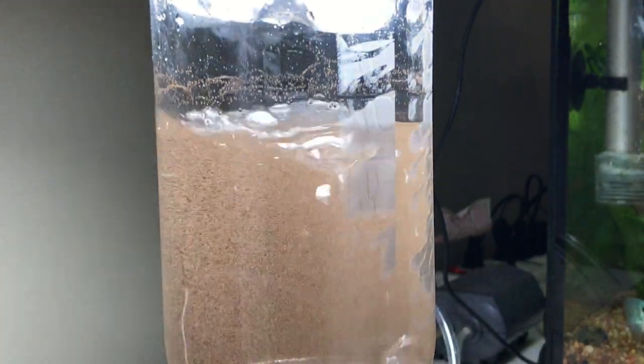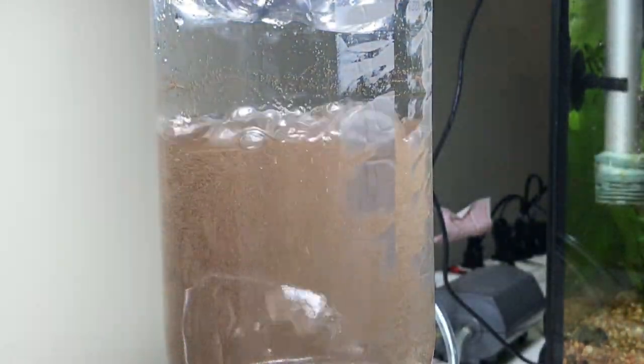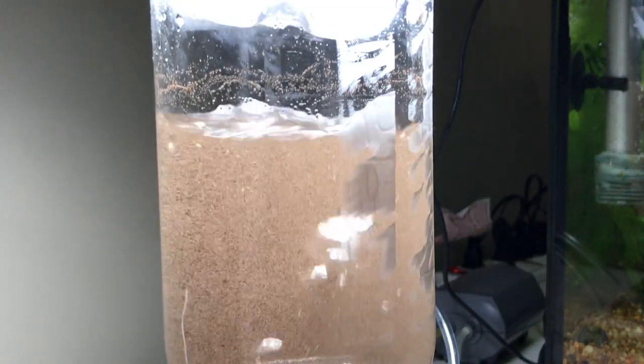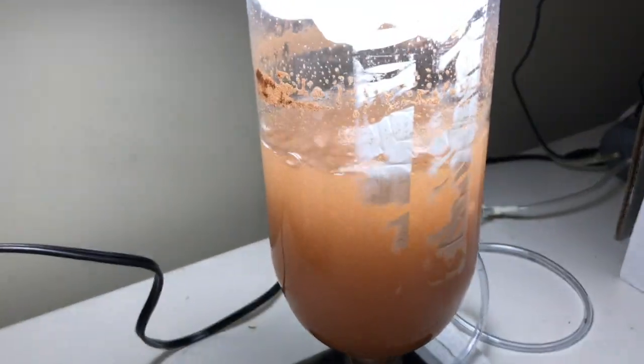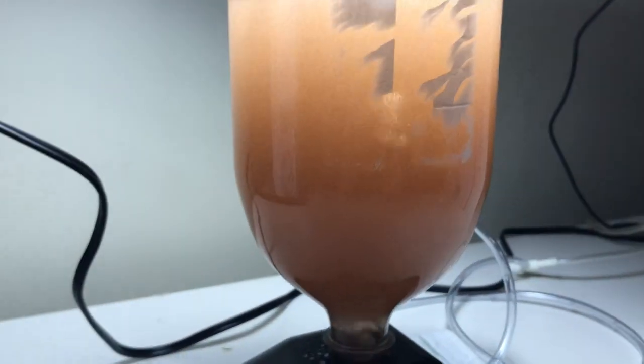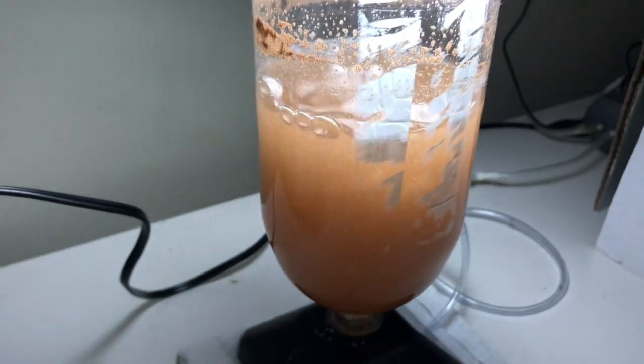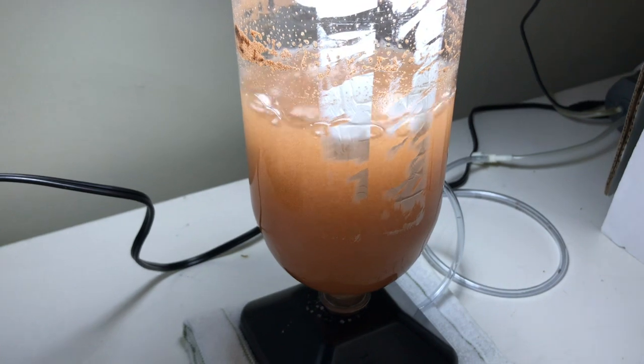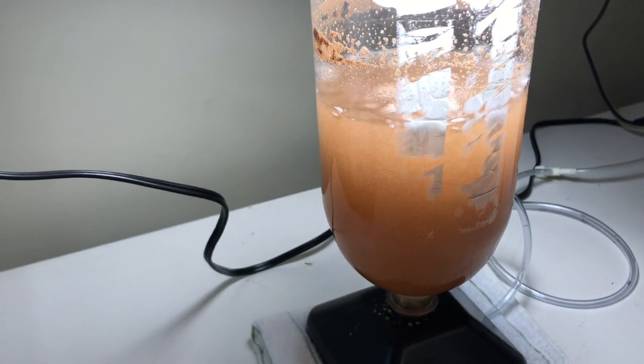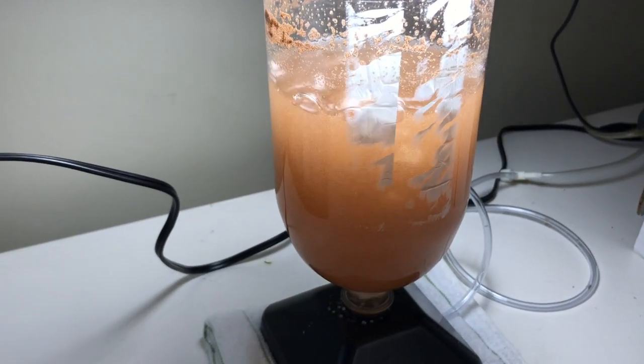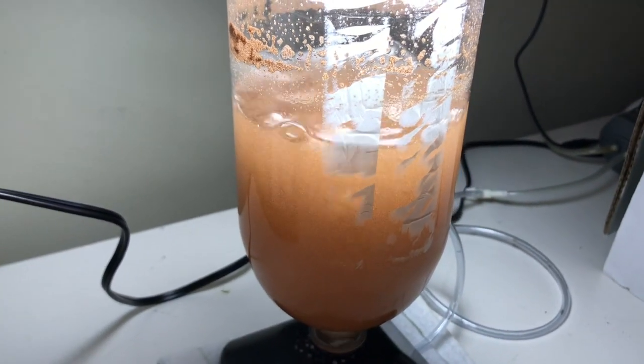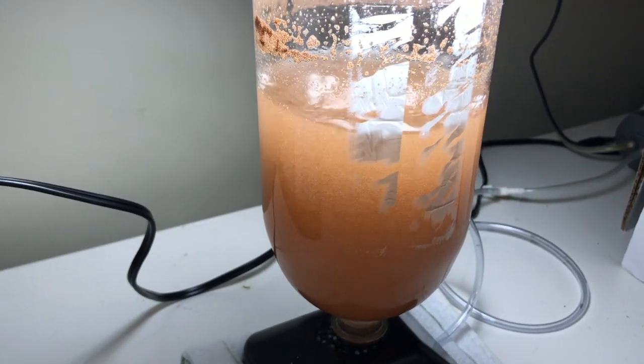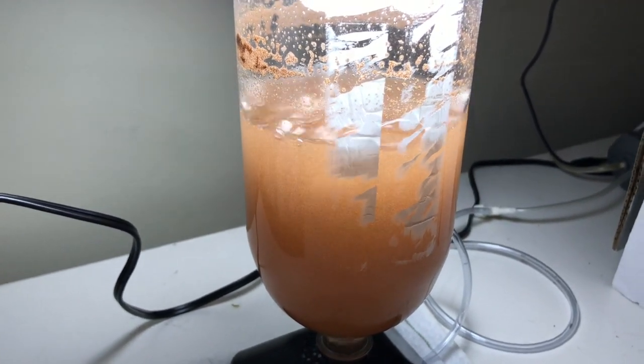After you've had it going for a while, you'll notice it gets this pink consistency to it. Once that happens, you should have some brine shrimp hatched in there. You'll turn the airline off and then put the light to the bottom to collect the brine shrimp.